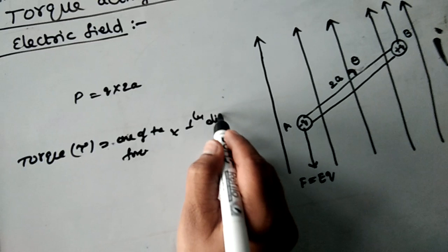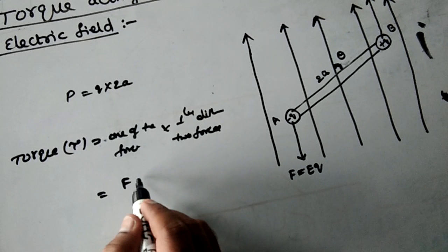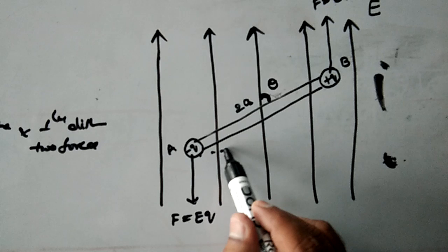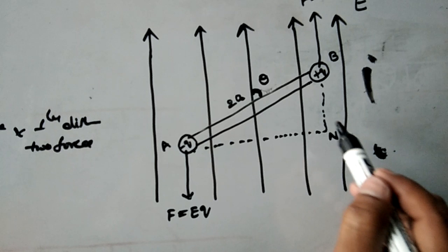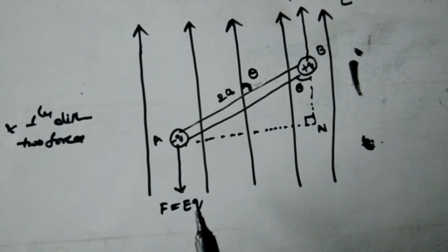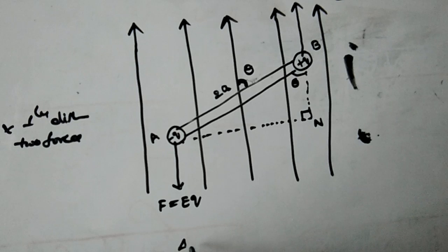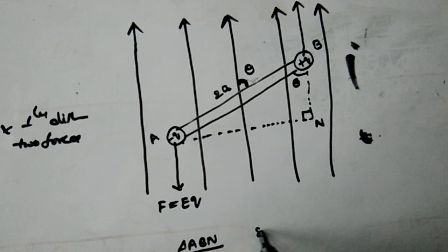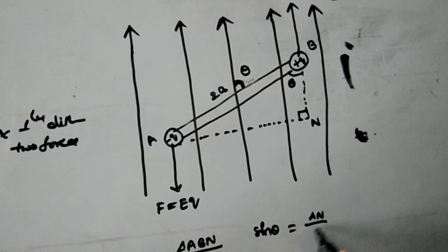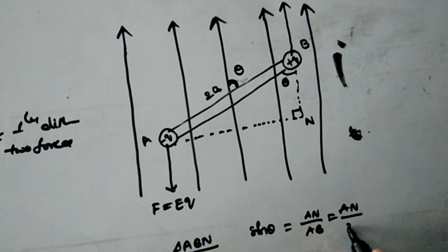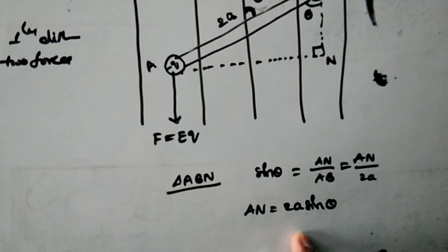The formula for torque is: tau equals one of the forces multiplied by the perpendicular distance between the two forces. Drawing a perpendicular line from the geometry, angle theta appears, and from triangle ABN, sin theta equals the opposite side AN divided by the hypotenuse AB, where AB equals 2A (the length of the dipole). So the perpendicular distance AN equals 2A sin theta.